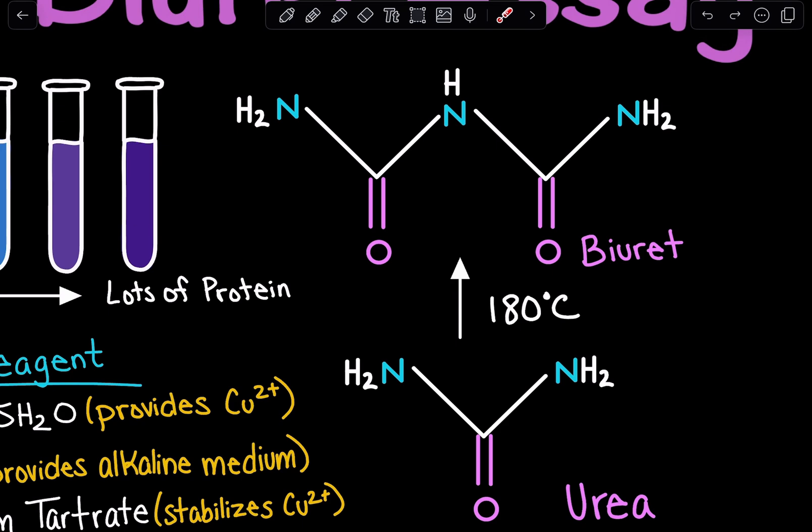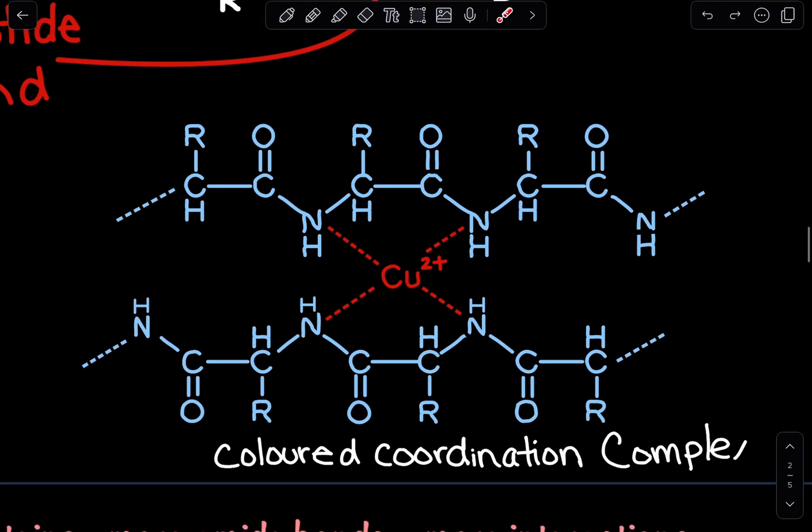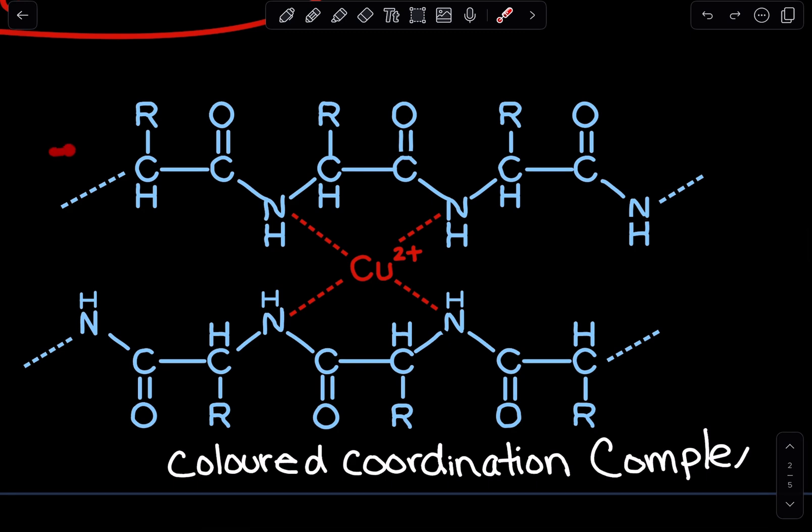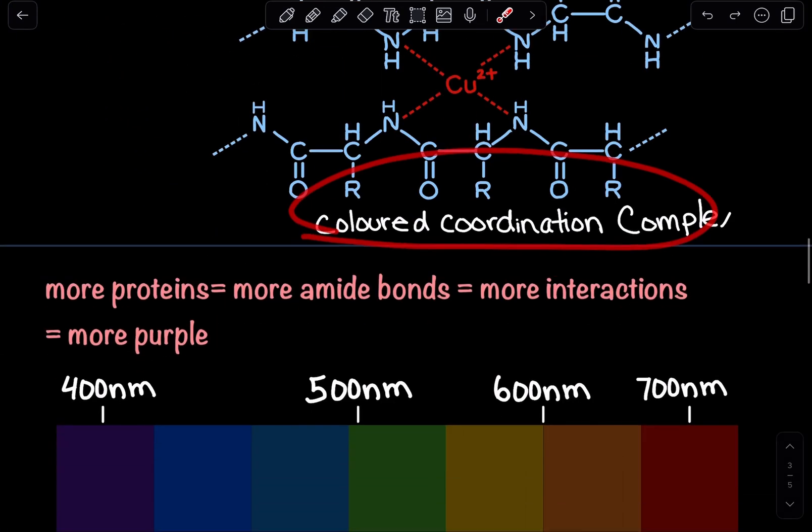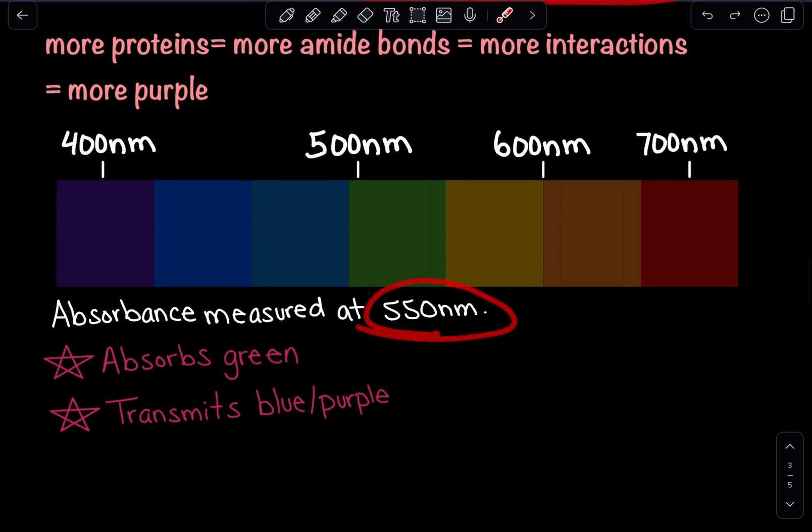This technique was applied towards proteins because proteins have a peptide or amide bond as well. If we take a look at this example, we have two peptide chains with variable R groups, denoting that these could be various amino acids. When we took peptides and added in the copper ions, the copper ions once again formed that interaction with the amide bonds, and we got this colored coordination complex, which also absorbed light at 550 nanometers.